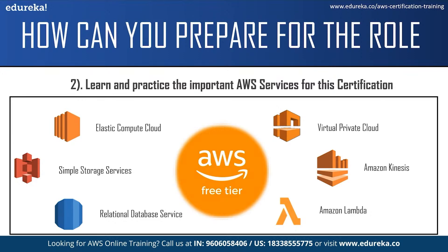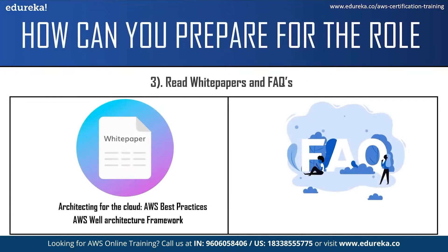You can practice some of these services using an AWS free tier account. The AWS free tier account allows you to access over 85 AWS services for free — all you have to do is submit the required information. Moving on to the next step: referring to white papers and frequently asked questions. White papers will give you technical knowledge about various AWS concepts and services. Two of the best white papers for the certification are Architecting for the Cloud: AWS Best Practices and the AWS Well-Architected Framework. The FAQs will help you clear your doubts regarding the certification.